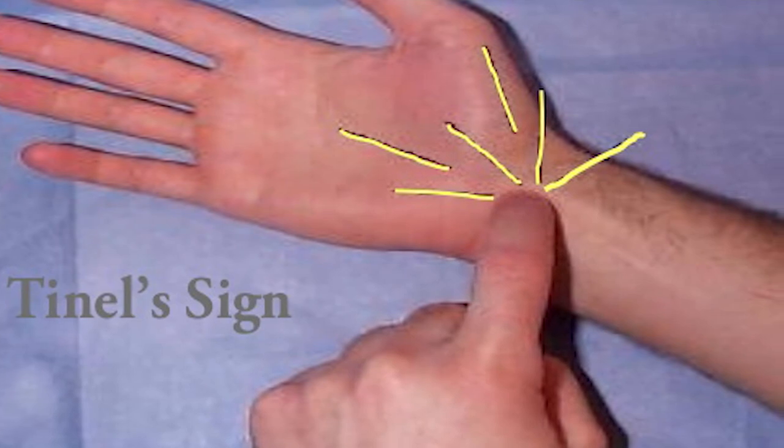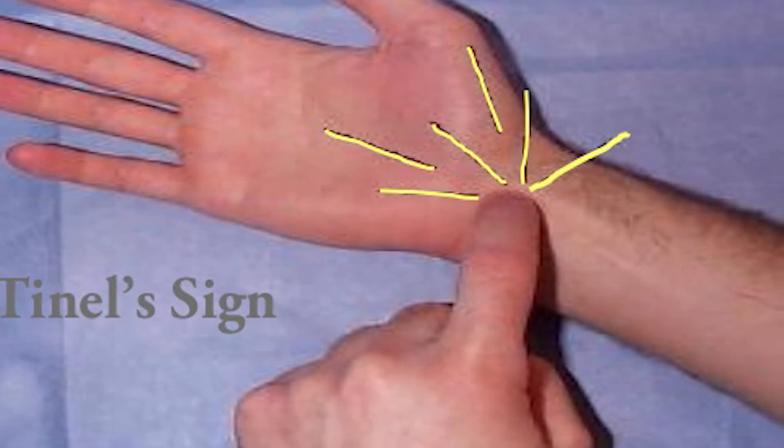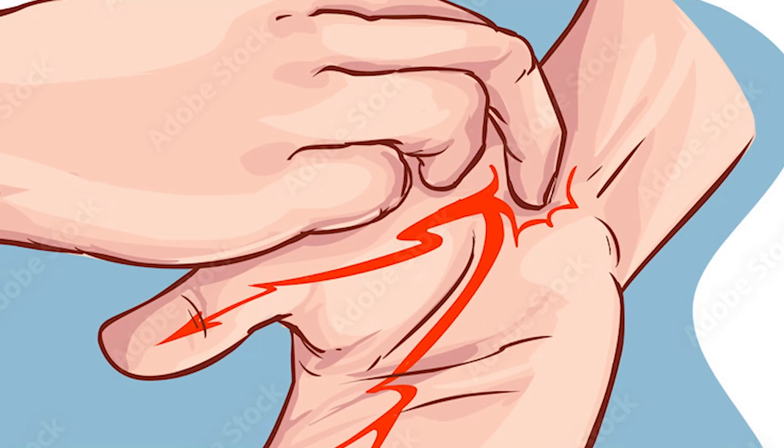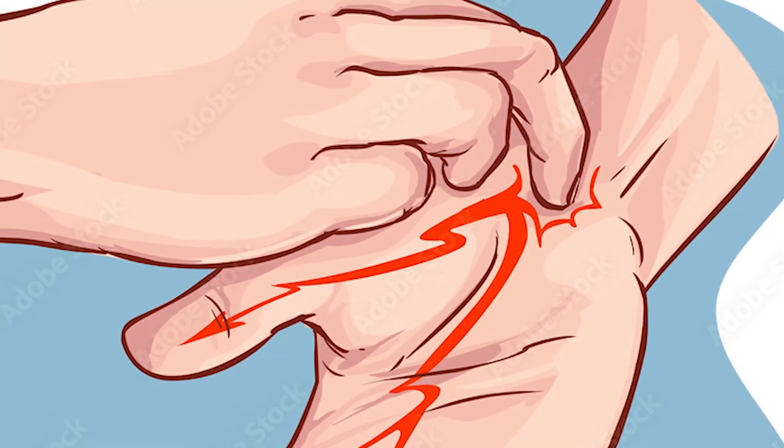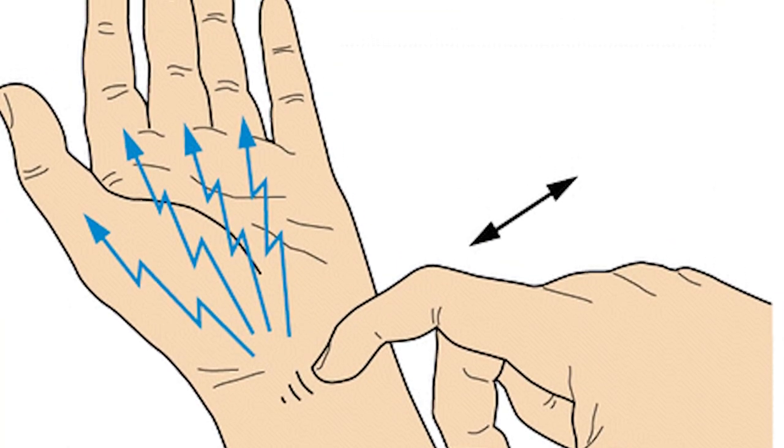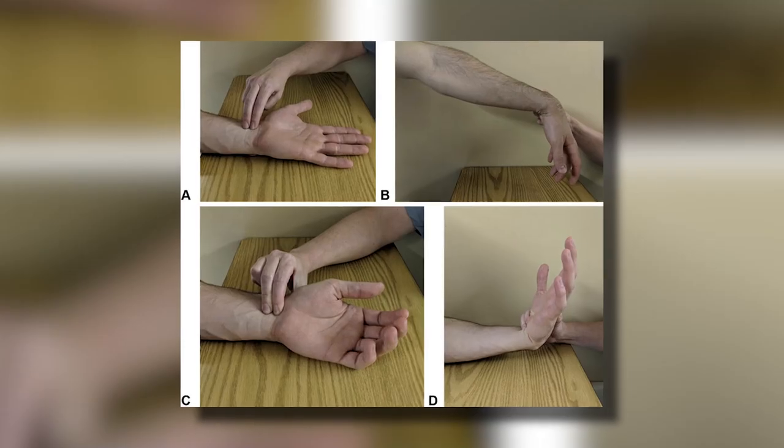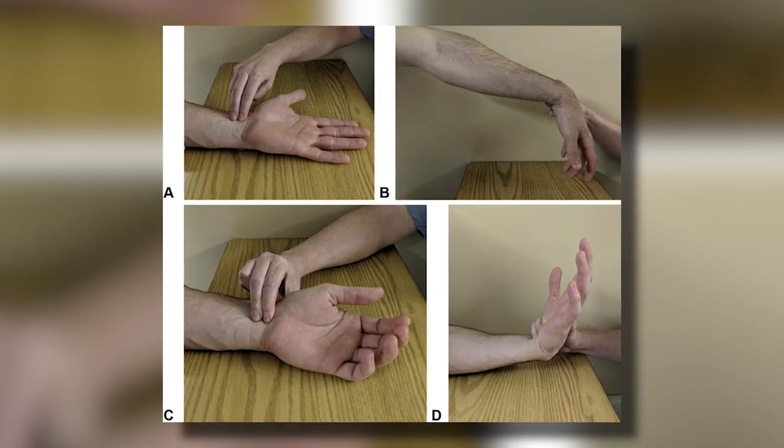Secondly there is the Tinel's test. It's like a wrist drum solo but with a twist. The clinician taps on the nerve pathway, and if it sets off your sensation symphony in the thumb, pointer finger, middle finger, and half of your ring finger, that's another clue in the carpal tunnel mystery.